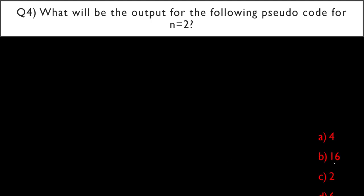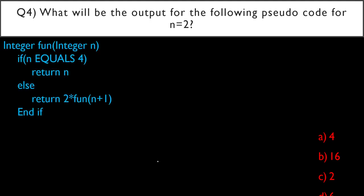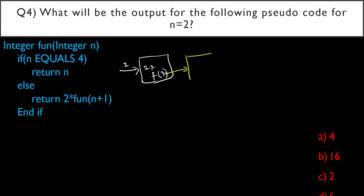Options: A) 4, B) 16, C) 2, D) 6. The pseudocode: integer fun(integer n) — if n equals 4 return n, else return 2 * fun(n + 1). This is a simple recursion question. Initially N = 2; since 2 ≠ 4, it returns 2 * fun(3). Whatever value fun(3) returns will be multiplied by 2.